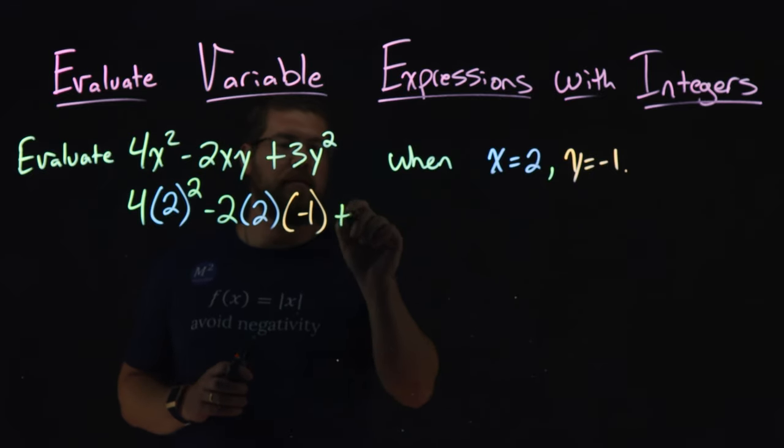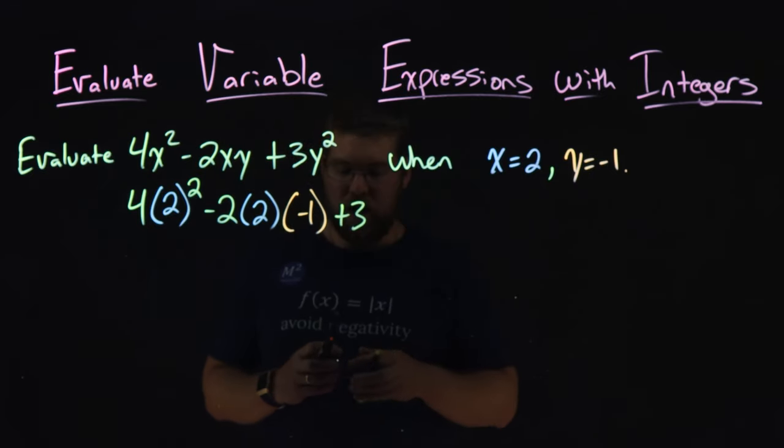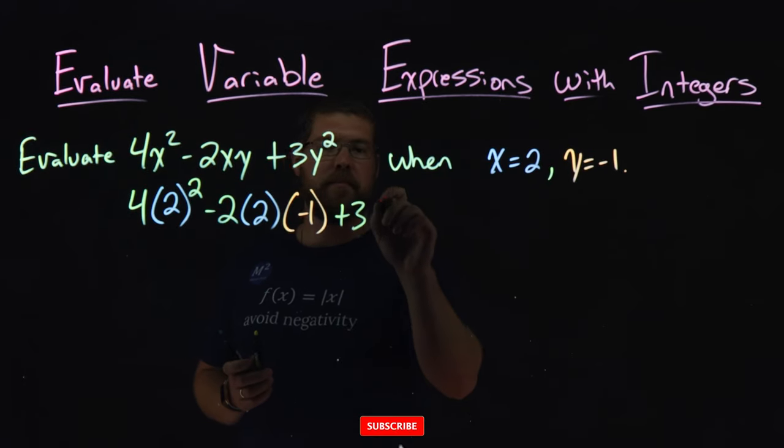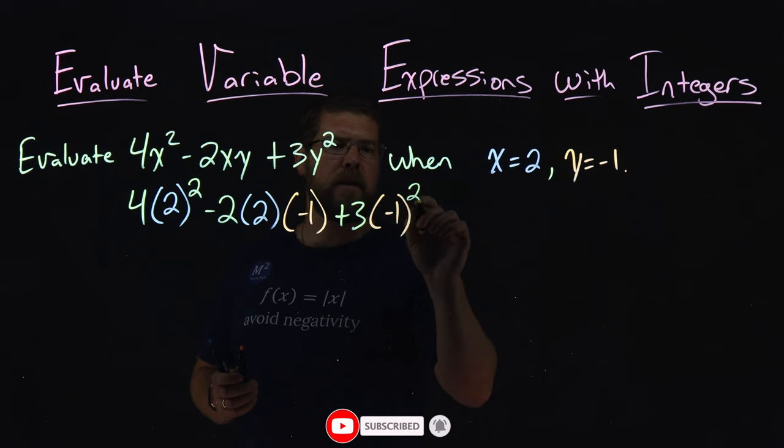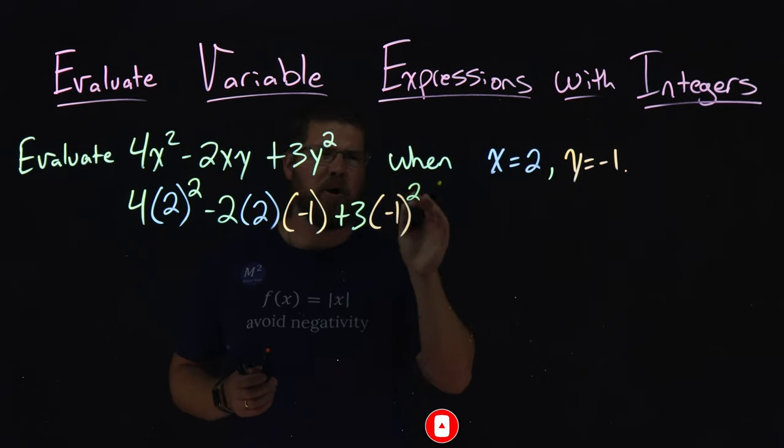Now we're adding this, so we plus a 3, and instead of y, again, we have a negative 1, and we're squaring that. Not too bad. We have the first part done.